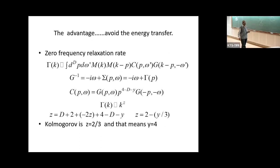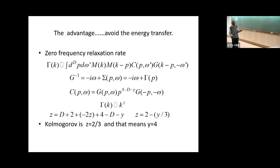Once you do the same power counting with this model: gamma(k) proportional to k^z; G is one over sigma; there is a minus 2z from the two G's; d+2 from the integral; and the correlator gives k^(4-D-y). So z equals 2 minus y/3. For Kolmogorov, z = 2/3, which requires y = 4. So y=4 in the De Dominicis-Martin model is Kolmogorov, and perturbation theory works well around y=0.